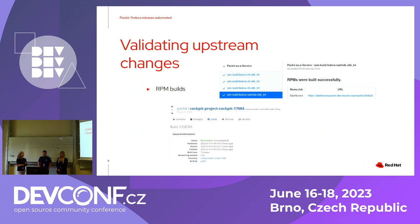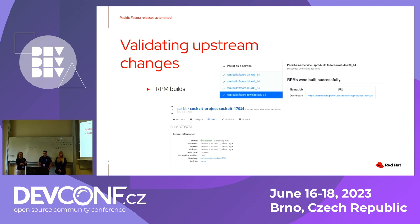First point: validating upstream changes. You can do this by multiple so-called jobs that you can configure Packit to do. The most frequently used one is the RPM build. For the RPM build, Packit can react to any pull request, commit, or release in your upstream repository, take the changes and forward them to the Copr build system, and then provide feedback in the place where you develop the change.